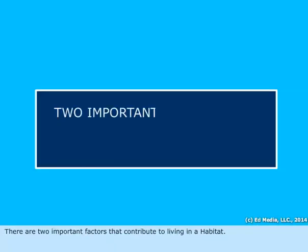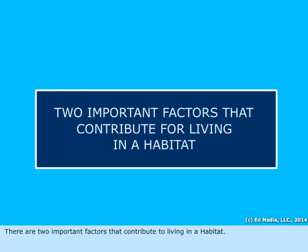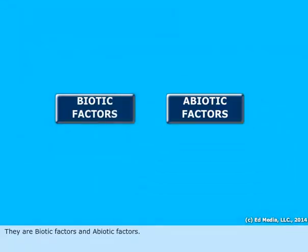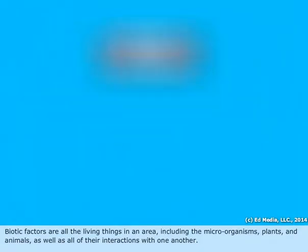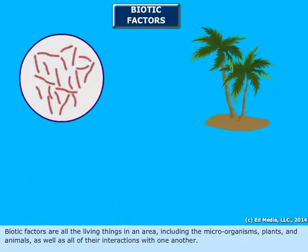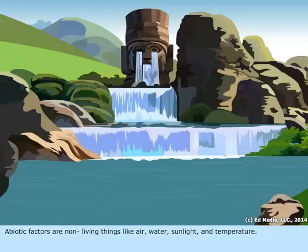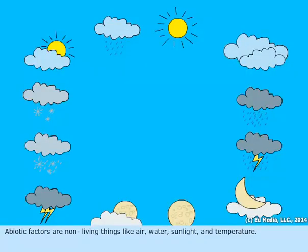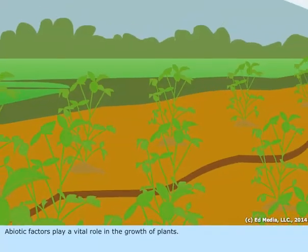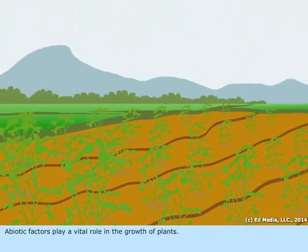There are two important factors that contribute to living in a habitat: biotic factors and abiotic factors. Biotic factors are all the living things in the area, including microorganisms, plants, and animals, as well as all of their interactions with one another. Abiotic factors are non-living things like air, water, sunlight, and temperature. Abiotic factors play a vital role in the growth of plants.